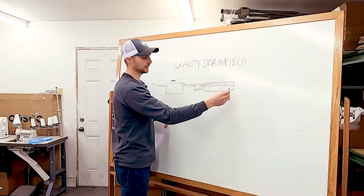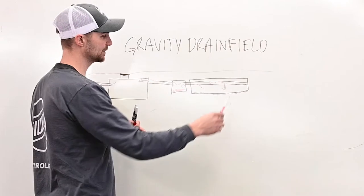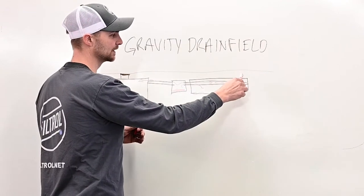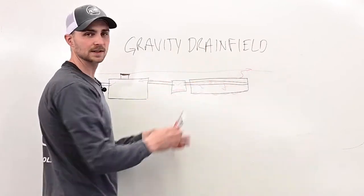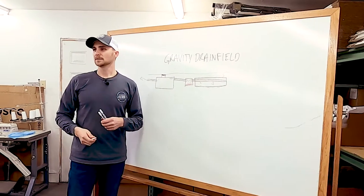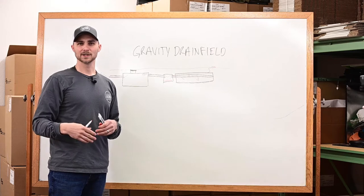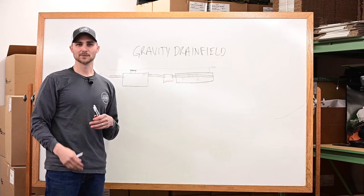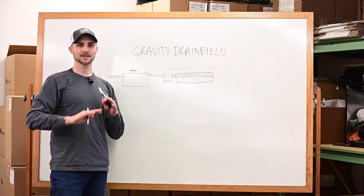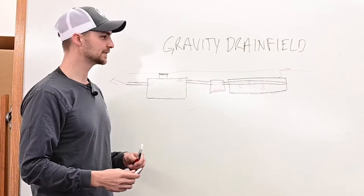Another issue that's more common on mound systems, but that does happen on conventional drain fields is that sewage can leak to the surface, creating issues where you might have a pet or a dog that might go and drink that, might roll in it, you might have kids playing in it, really nasty stuff you don't want to have to deal with.